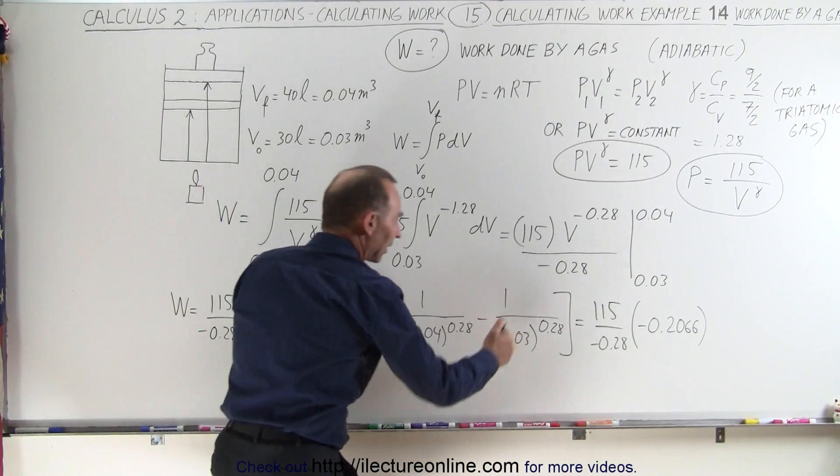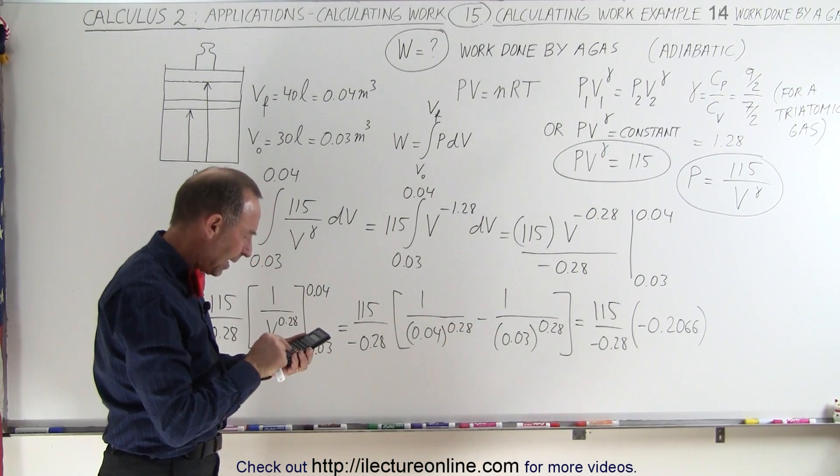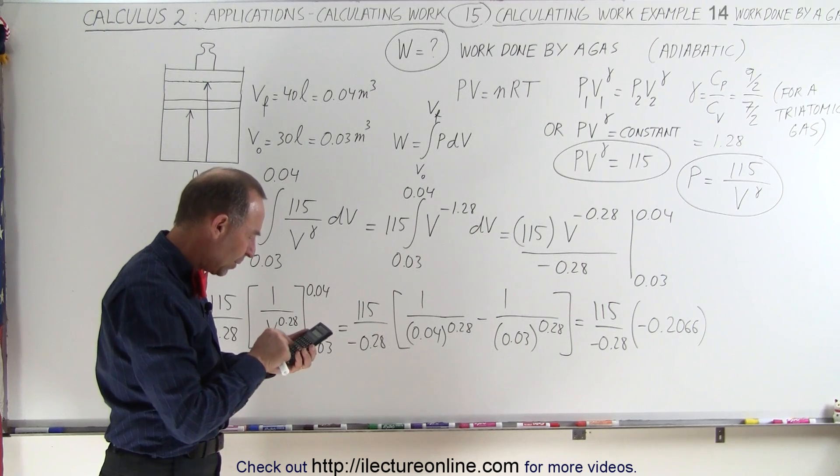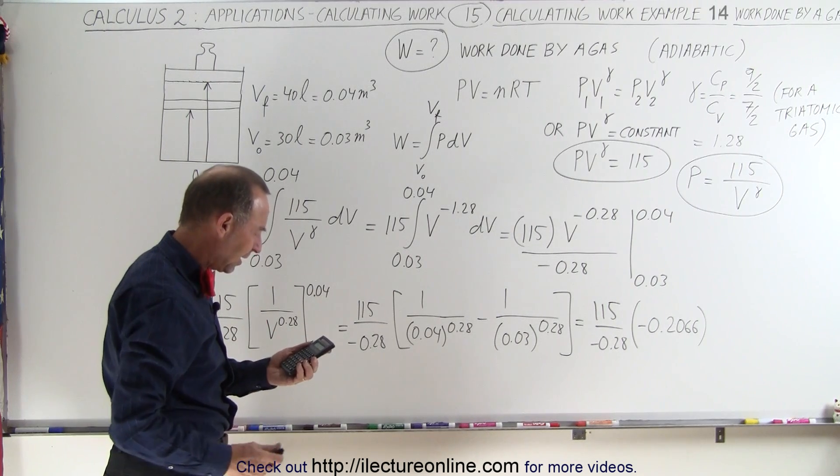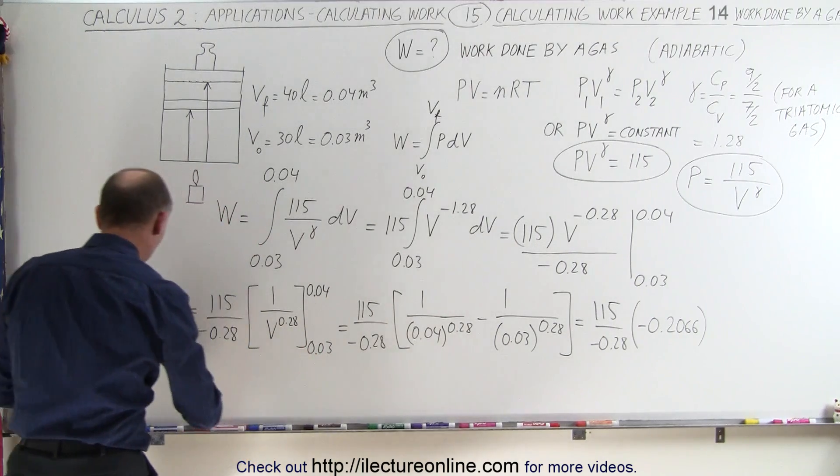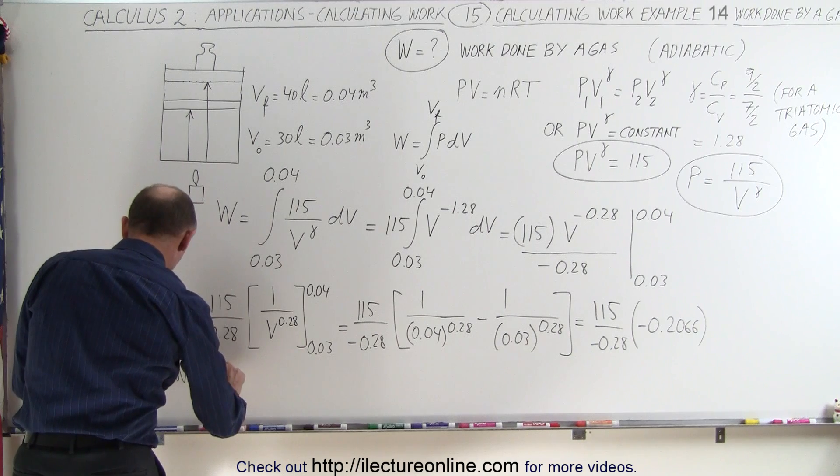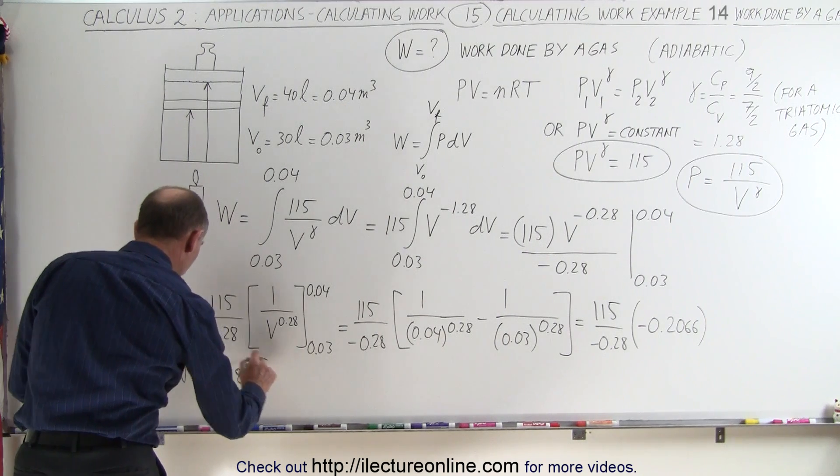Now we multiply times 115 and divide by 0.28 negative equals. That tells us then that the work done is going to be equal to 84.8 joules.